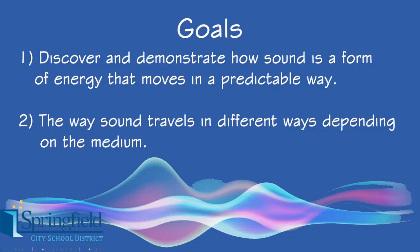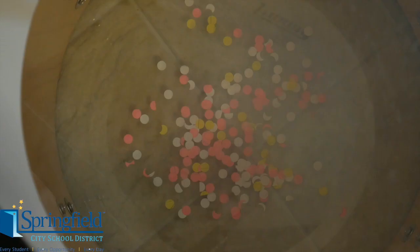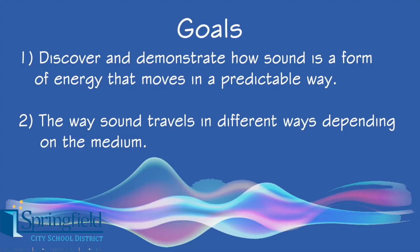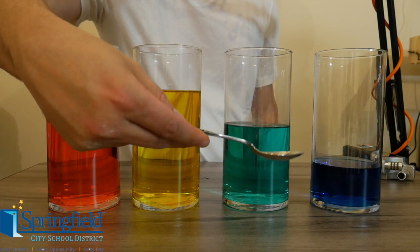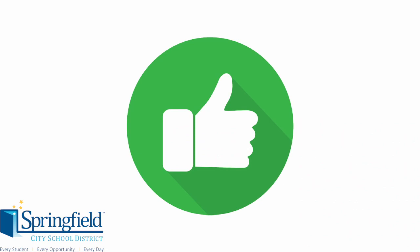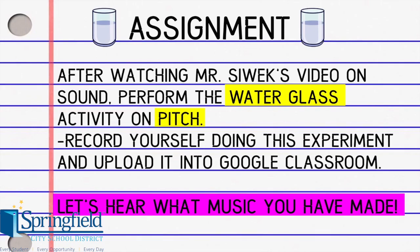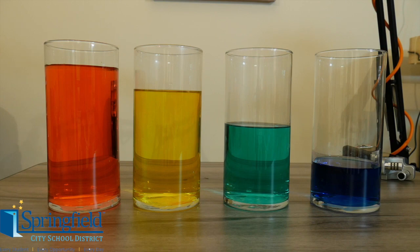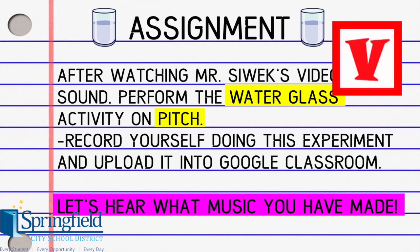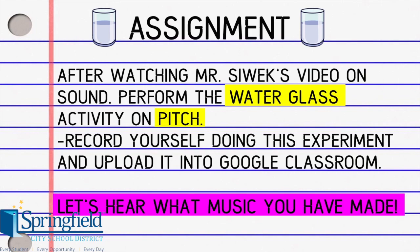Alright, let's review what we have learned today. Going back to our goals for this week, we've discovered and demonstrated how sound is a form of energy that moves in a predictable way. We've also noticed that sound travels in different ways depending on the medium, just like we did with the jars of water and our homemade oscilloscope. For your activity this week, make sure you complete the water glass activity for your assignment — please record yourself doing it and upload it to Google Classroom so we can all hear and see what you're doing. Make sure to join our daily class meetings Monday through Friday. Until then, be safe and I look forward to hearing from you very soon.